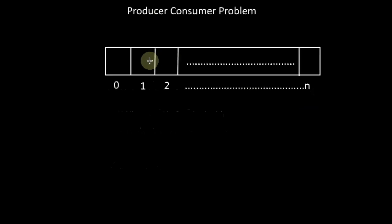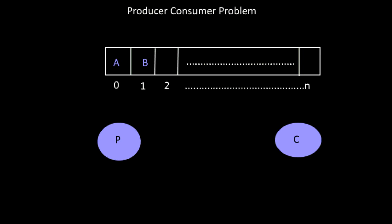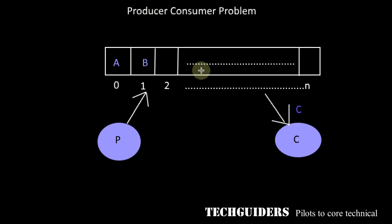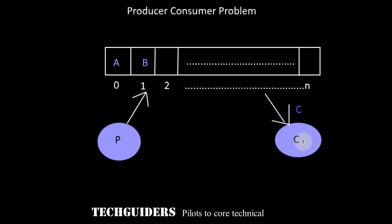There is a buffer pool whose size is bounded or fixed. There are n number of buffers and each buffer can hold an item. There is a producer and a consumer. The producer produces items and adds them to the buffer, and the consumer removes items from the buffer and consumes them.